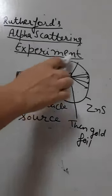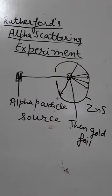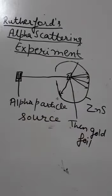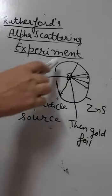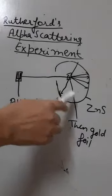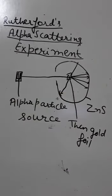A movable circular screen coated with zinc sulfide was placed on the other side of the foil for detecting the direction in which the alpha particles moved. A flash of light was produced on the screen when alpha particles struck the screen.